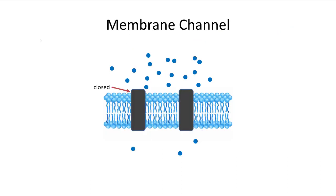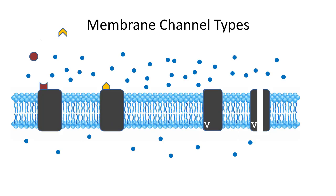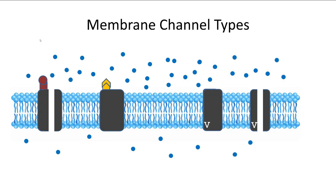A membrane channel is a protein embedded within the plasma membrane. Each ion has its own channel, which can be closed or open. When the channel is open, that ion is allowed to go through down its concentration gradient. Some membrane channels open when a certain chemical, such as a neurotransmitter, binds to the receptor. Each receptor is unique, so a specific chemical binds to only specific receptors. These are called chemically gated channels and are found on the neuron's cell body and dendrites, where it receives neurotransmitters from another neuron.